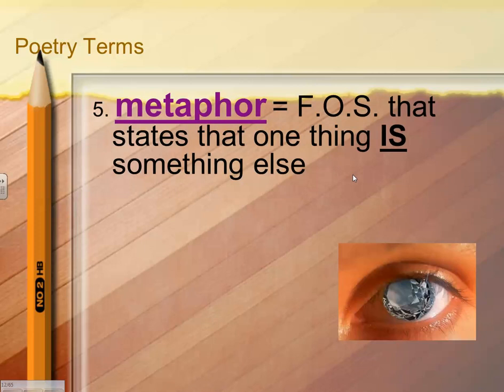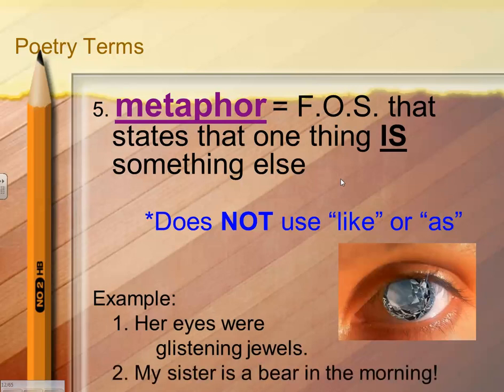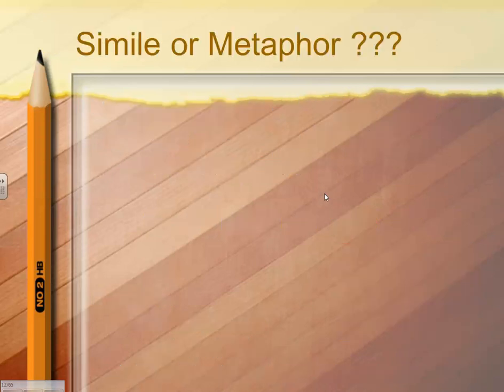A metaphor is very similar, except it doesn't compare using like or as — it just says something is something else. For example, her eyes were glistening jewels. My sister is a bear in the morning. You're saying something is something else to make a point. It's a figure of speech — that's what FOS stands for — it's a figure of speech to make a point.